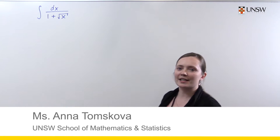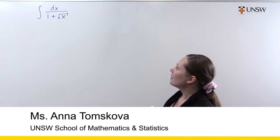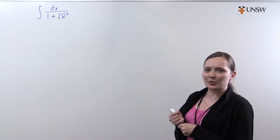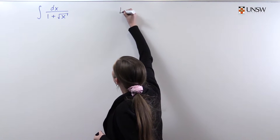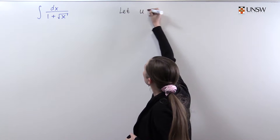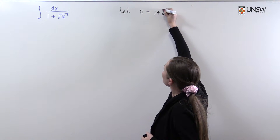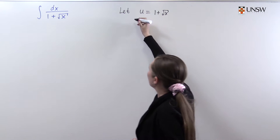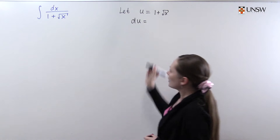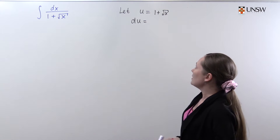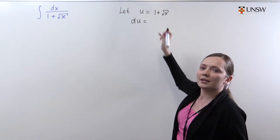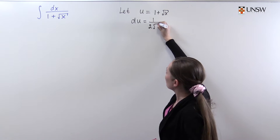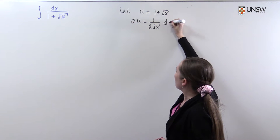The problem is to solve the indefinite integral dx over 1 plus square root of x. To solve this problem we will use the substitution: let u equal 1 plus square root of x. We need to find du, so we differentiate the right-hand side. The derivative of 1 is 0, the derivative of square root of x is 1 over 2 square root of x, and we need dx.